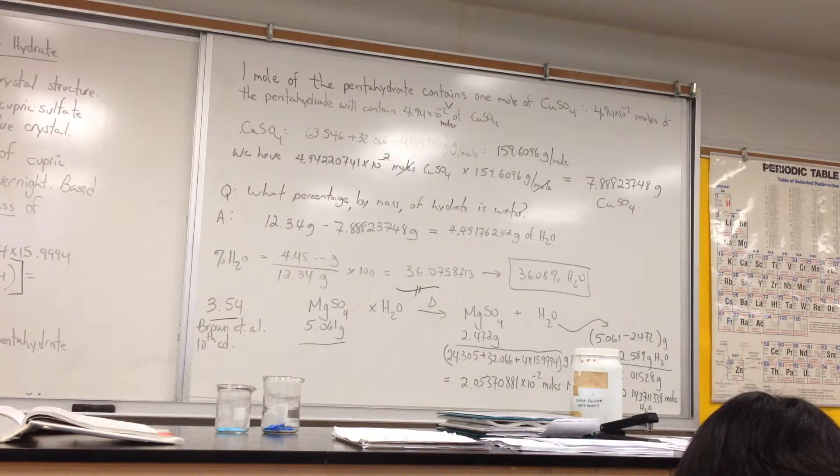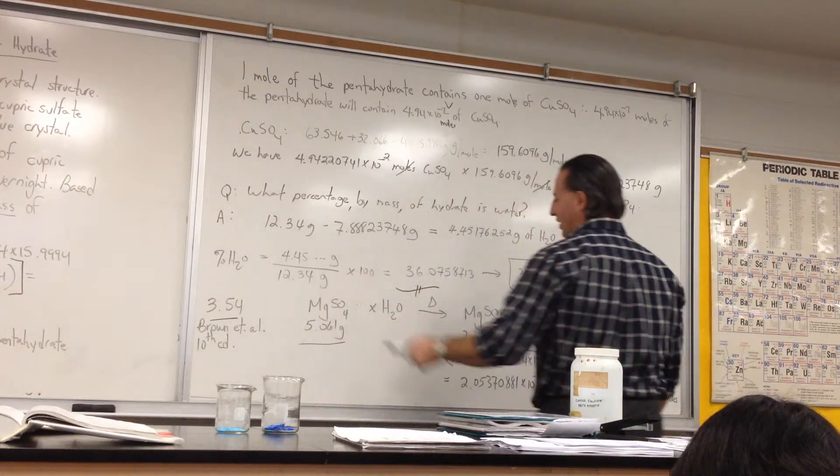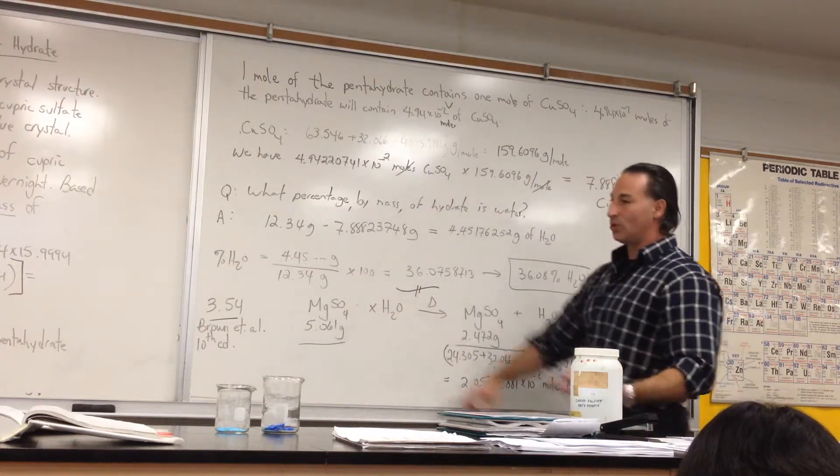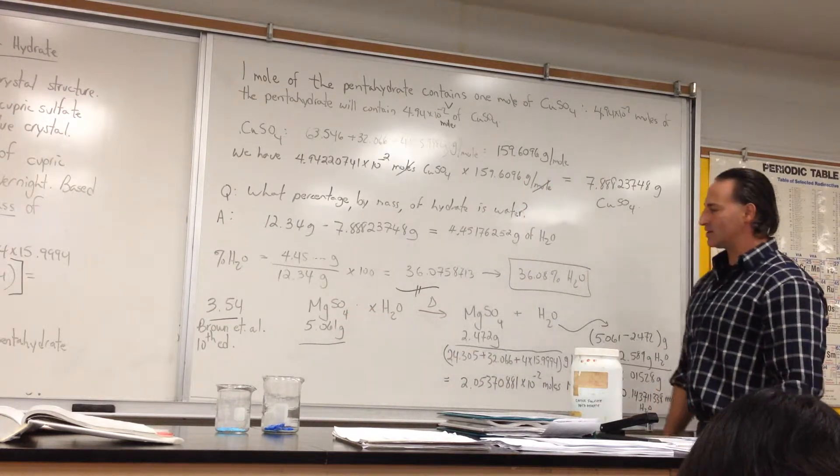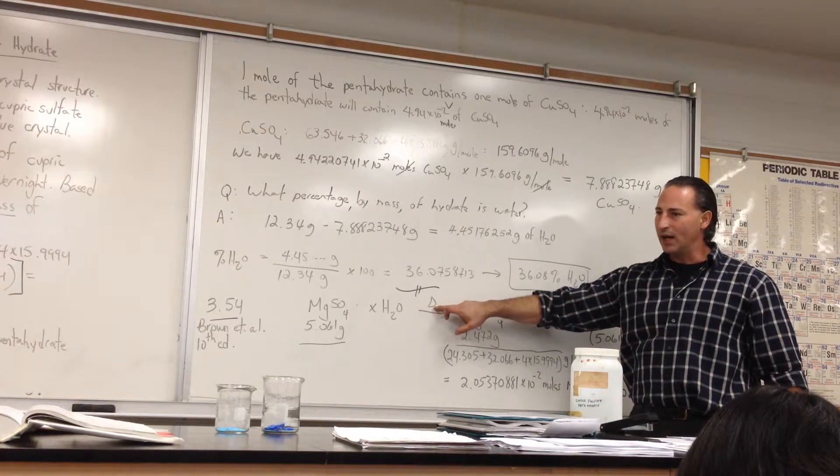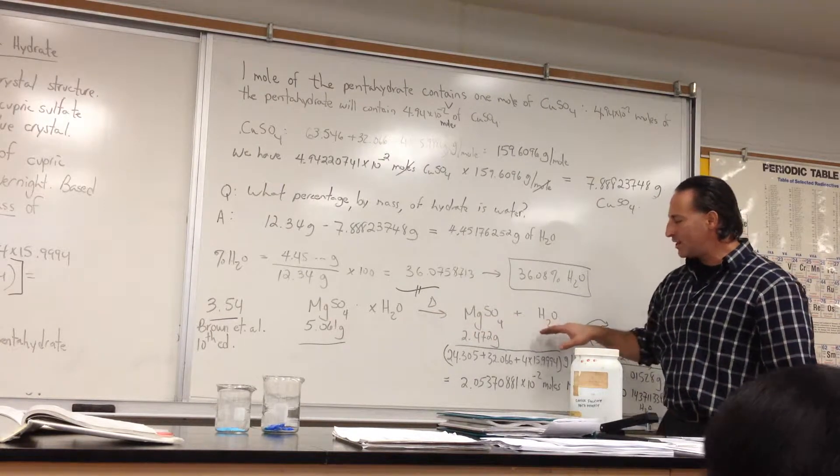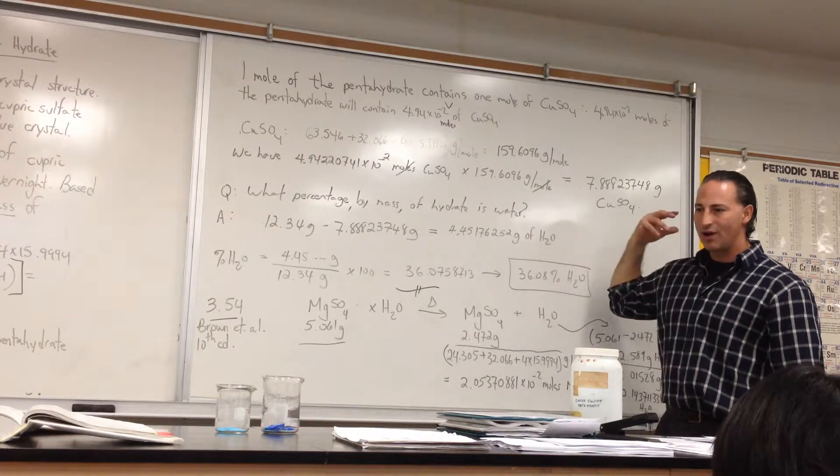So we begin by writing the chemistry of what's going on. Here's the magnesium sulfate hydrate. And I put X there because I don't know what the proportion of moles of water to moles of magnesium sulfate is. The triangle here symbolizes heat being applied. And after the heat is applied, all you have is pure magnesium sulfate, and the water has driven off in the form of vapor.